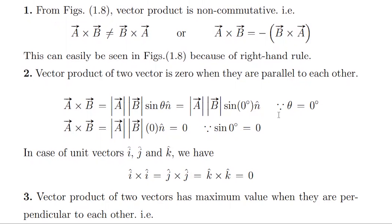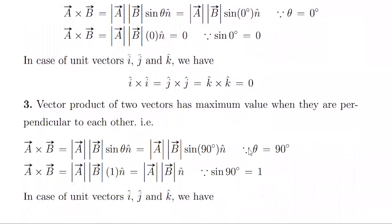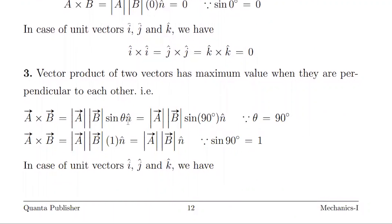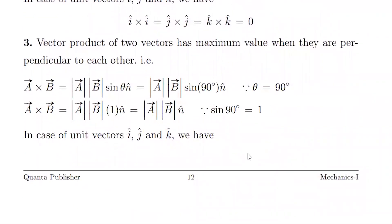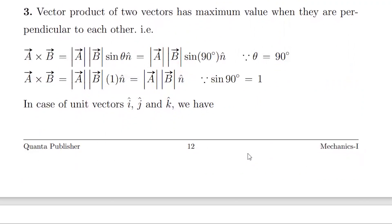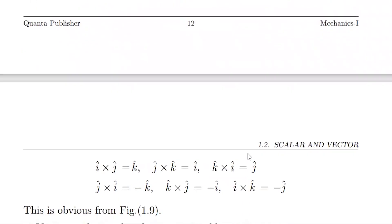If we take two vectors along the x-axis, the unit vector product i cross i equals zero; similarly j cross j equals zero, and k cross k equals zero. For perpendicular vectors, θ becomes 90° and sin(90°) equals 1, so the product of two vectors gives the maximum value. The interesting thing about the vector product is the perpendicular case with unit vectors, which is somewhat more complex compared to the dot product because here the resultant also has a direction.